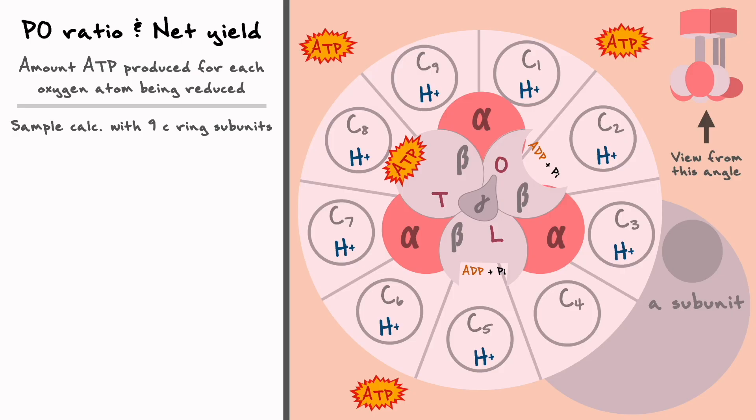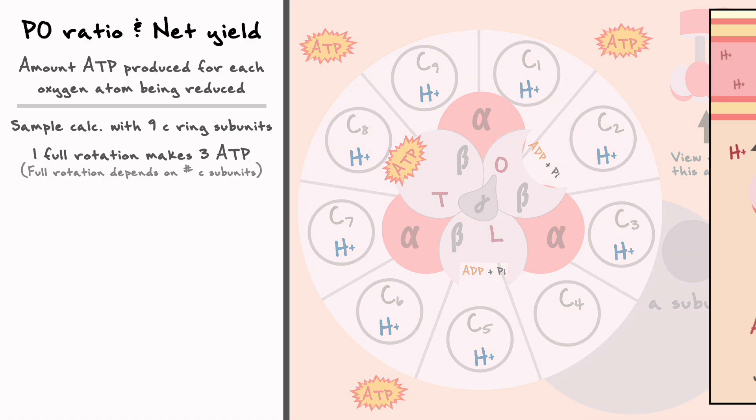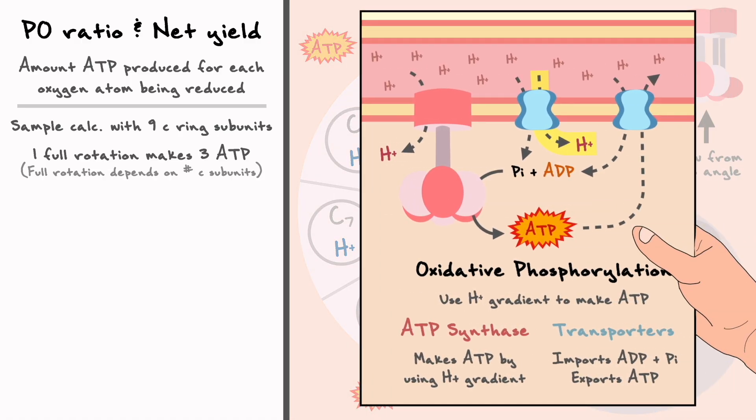So as you can see, 1 full rotation of ATP synthase, which in our case took 9 protons to make, produced 3 ATPs. Now in addition to those 9 protons, we also have to consider that to import the phosphate into the matrix, it takes an additional proton per phosphate, so to make 3 ATPs, it costs an additional 3 protons.